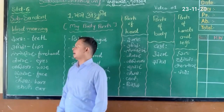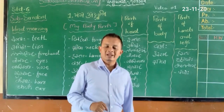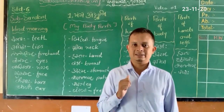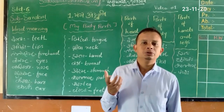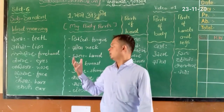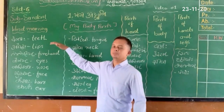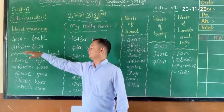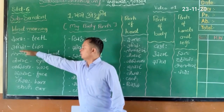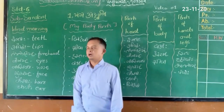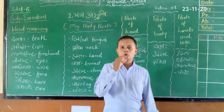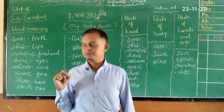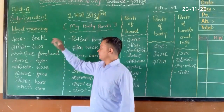First of all, Dantah. Dantah means teeth — know very well what is the meaning of Dantah, it means teeth. Next, Ustah. Ustah means lips.